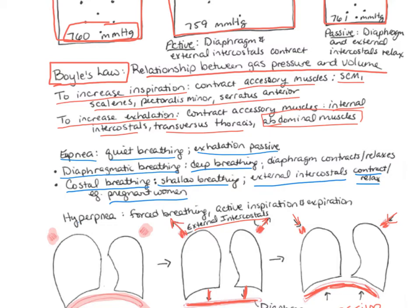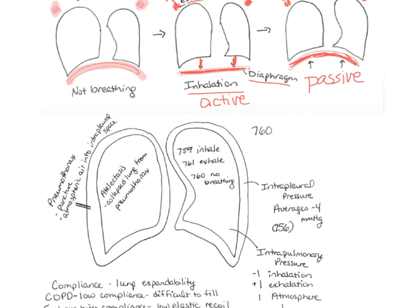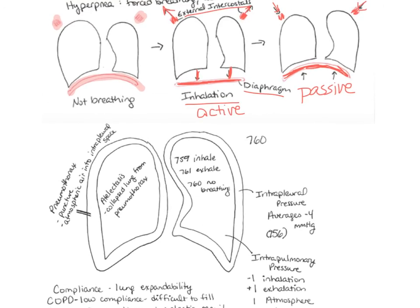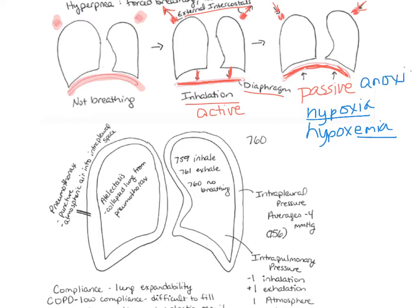Some other terms: hypoxia means decreased oxygen level in the tissues. Hypoxemia means low oxygen in the blood — the suffix 'emia' always refers to blood, as in hypokalemia (low potassium in the blood) or hypercalcemia (high calcium in the blood). Anoxia means a complete loss of oxygen supply.